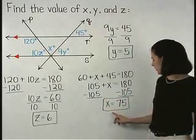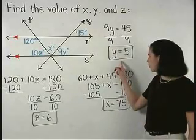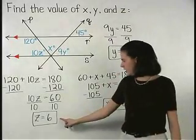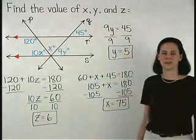So x equals 75, y equals 5, and z equals 6.